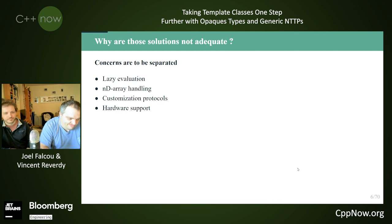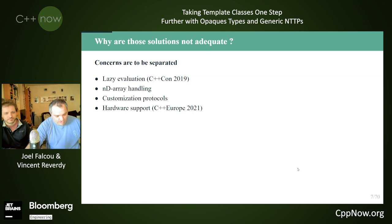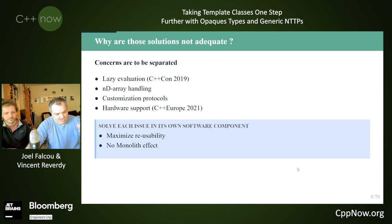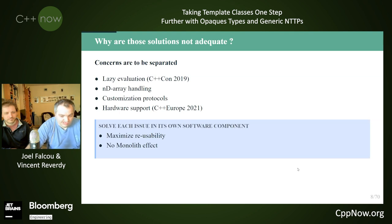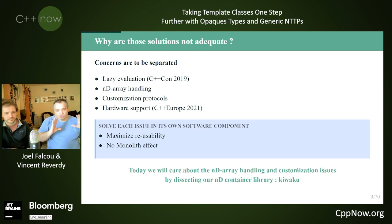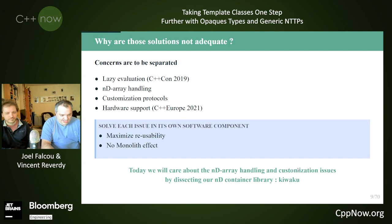Our stance is that these are four separate concerns that should be solved separately. We have already given talks about some of these subjects — how to do proper lazy evaluation and how to manage hardware support in a generic way. Today we will try to fit into this pattern of thought by seeing how we can maximize the reusability of those components and avoid the monolith effect by focusing on the N-dimensional array problem.